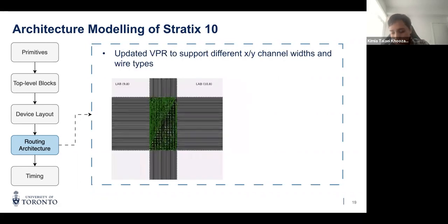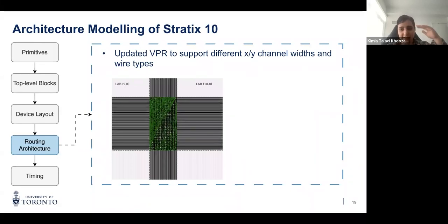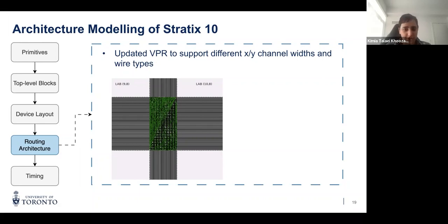One update we made to VPR during the process of capturing Stratix 10 routing was adding support for unequal X and Y channel widths, because Stratix 10 has wider horizontal channel widths. Before, VPR didn't support routing graphs with unequal X and Y channel widths. We addressed that limitation — now VPR can model architectures with different channel widths, which is quite common in many commercial architectures.